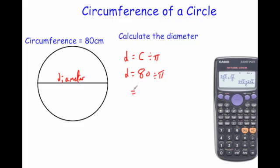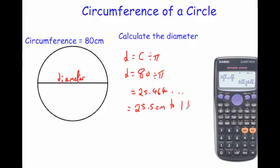Doing 80 divided by pi on the calculator gives 25.464..., which rounds to 25.5 centimetres to one decimal place. So to summarise: to find the circumference, you do pi times diameter; to find the diameter, you do the circumference divided by pi.